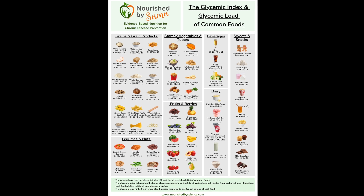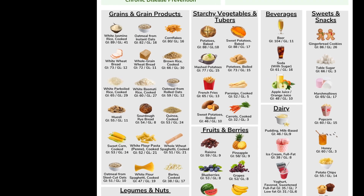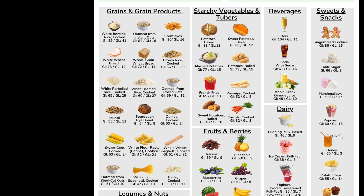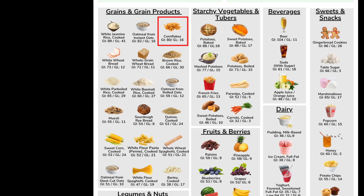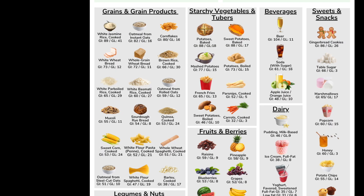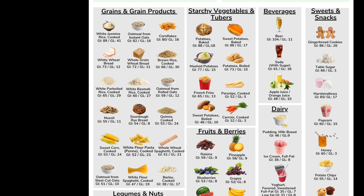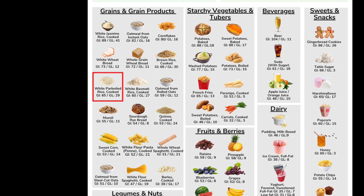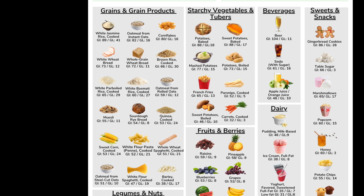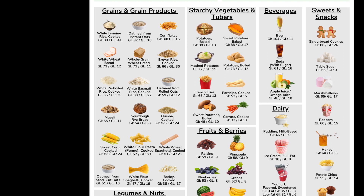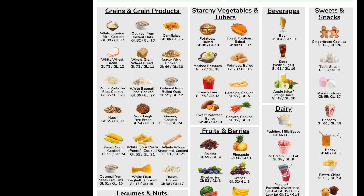That's very different for grains. Some have a very high glycemic index, such as white jasmine rice at 89, instant oatmeal at 82, cornflakes at 80, and white wheat bread at 73 — with these, you get a blood sugar response almost as high as with pure sugar water. The grains category also provides better options: the glycemic index of brown rice or parboiled rice is about a third lower than that of white jasmine rice. Oatmeal made from rolled or steel-cut oats also has a substantially lower glycemic index than instant oatmeal, and sourdough rye bread at 54 compares favorably with white wheat bread at 73.